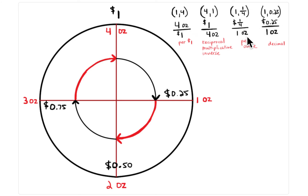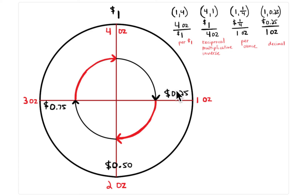So it's one fourth of a dollar per one ounce. In this diagram, the whole circle equals one dollar, and you divide it into four parts because it's four ounces for that one dollar. One ounce costs 25 cents — that's the reciprocal relationship. Two ounces cost two fourths of a dollar, three ounces cost three fourths, and four ounces cost four fourths, or one dollar. So that's four ounces per one dollar, and the reciprocal is one fourth of a dollar for one ounce.